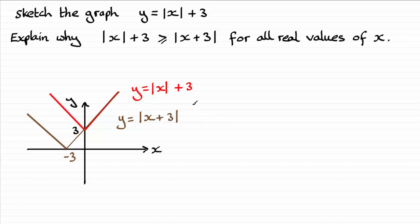Looking at the graphs: for any value of x greater than 0, substituting into either graph gives exactly the same value. But for values of x less than 0, for any such value we would get a certain value from the mod of all of x plus 3, but we would get a greater value from y equals the mod of x plus 3, because that graph is above the other graph when we take negative values of x.